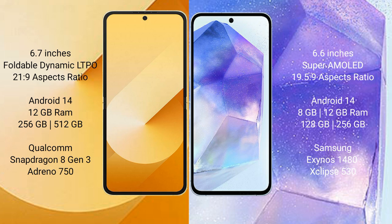Samsung Galaxy Z Flip 6 comes with 12GB RAM and 256GB internal storage, Qualcomm Snapdragon 8 Gen 1 processor, and GPU Adreno 730. Samsung Galaxy A55 comes with 6GB, 8GB, or 12GB RAM and 128GB to 256GB internal storage, Samsung Exynos 1480 processor, and GPU Xclipse 530.